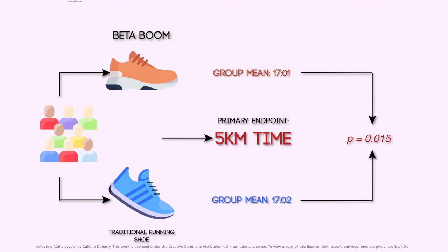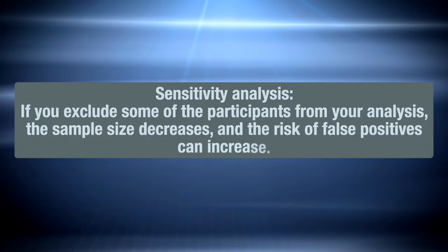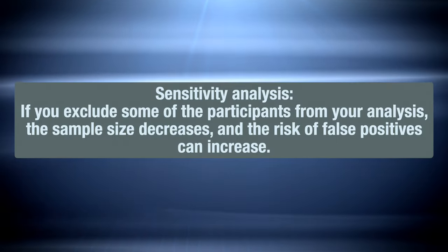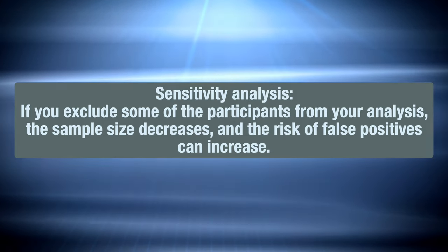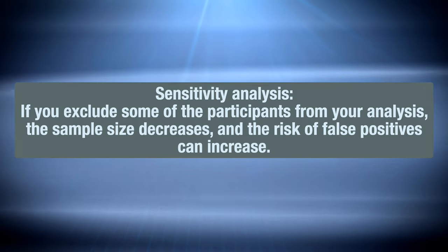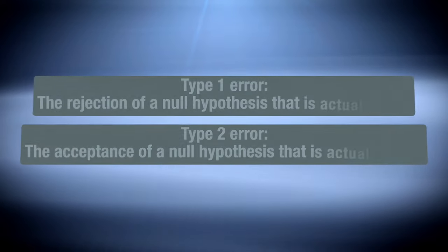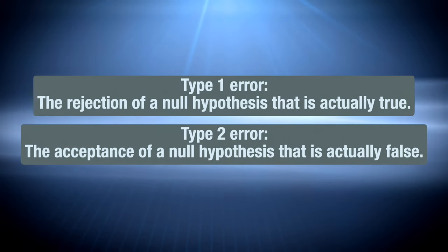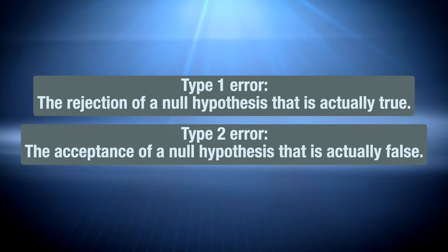For example, we could limit our analysis of the beta boom cohort to specialists in the 5km distance, rather than the diverse group of track athletes initially recruited. But as I mentioned before, the reliability of a study depends on its sample size. If we exclude some participants from our analysis, the sample size decreases and the risk of false positives can increase. It also means that if you play enough with the data, you may eventually get a positive result. This is known as a type 1 error.